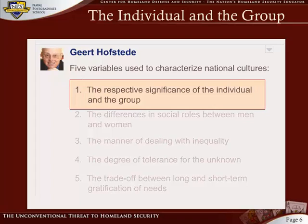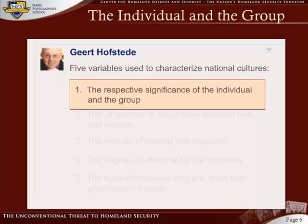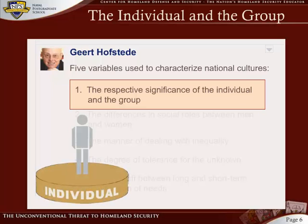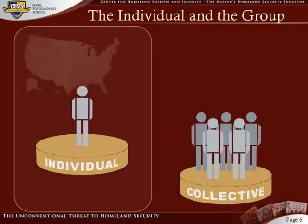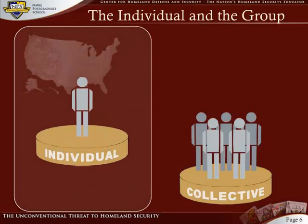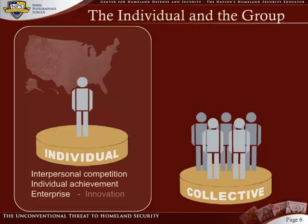Let's take a closer look at the first of these five variables: that every culture falls somewhere on the spectrum from pronounced individualism at one end to strong collectivism at the other. Individualist cultures include the industrialized North — for example, the US and the UK. These cultures tend to emphasize interpersonal competition, individual achievement, enterprise, innovation, and easy separation from kin and other groups. Though familiar to most of us, this type of culture is actually anomalous when looked at in relation to the majority of world cultures.